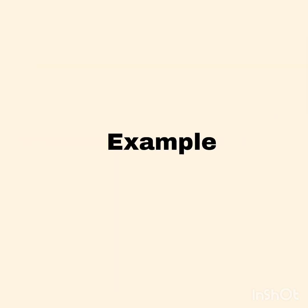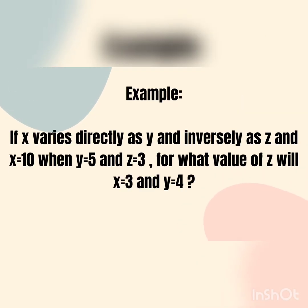For example, if x varies directly as y and inversely as z, and x equals 10 when y equals 5 and z equals 3, for what value of z will x equal 3 and y equal 4?